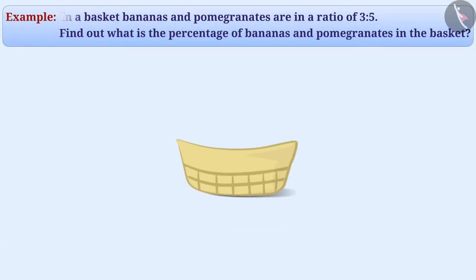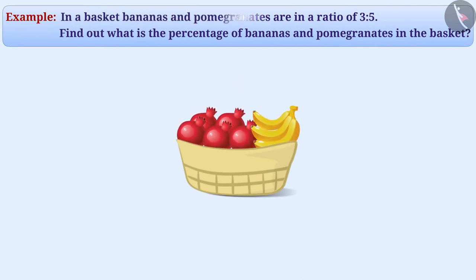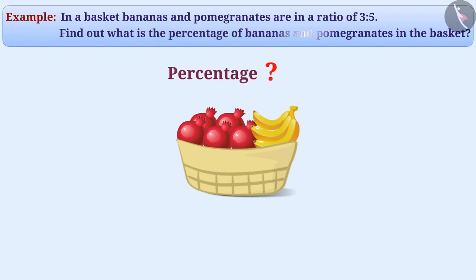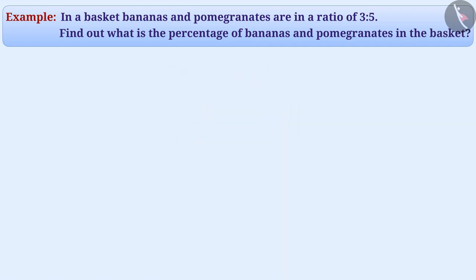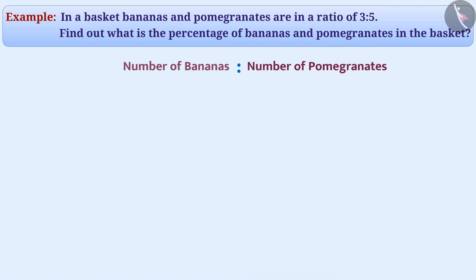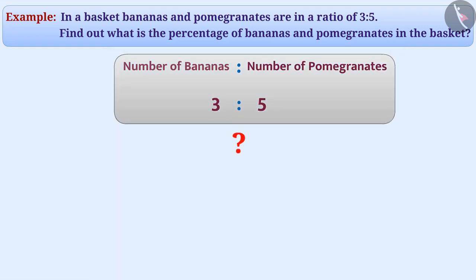In a basket, bananas and pomegranates are in the ratio of 3 is to 5. Find out what is the percentage of bananas and pomegranates in the basket. It is given that the ratio of number of bananas to the number of pomegranates is 3 as to 5. Can you tell what this means? Think.